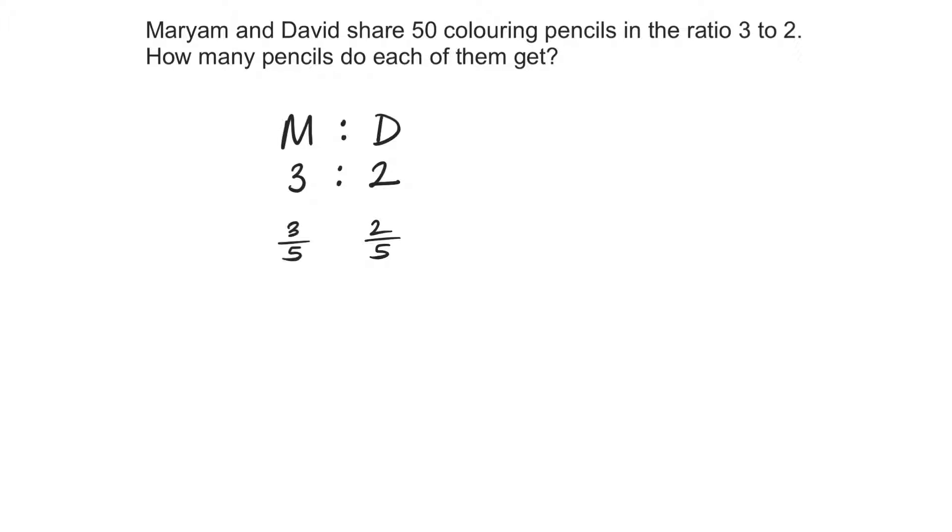Now that we have the proportions, we need to remind ourselves how much is being shared. 50 colouring pencils is being shared. This is the total that's being shared. So, out of the total of 50, Mariam will get 3 fifths of the 50 colouring pencils.